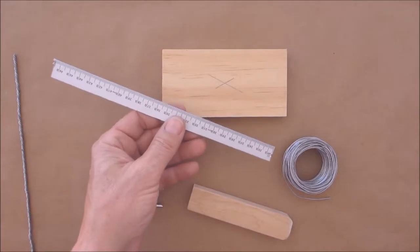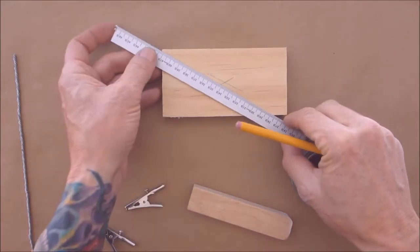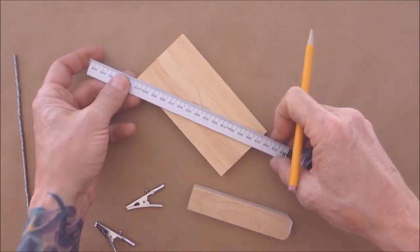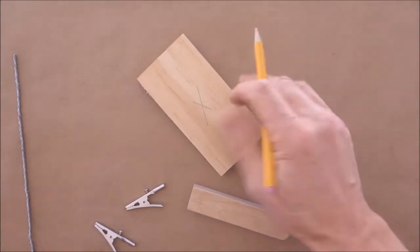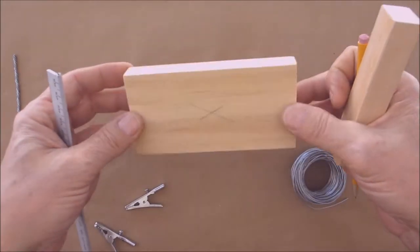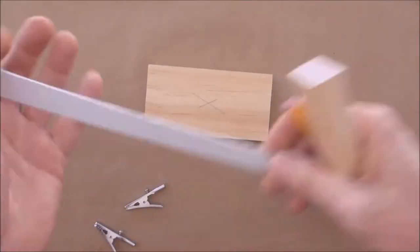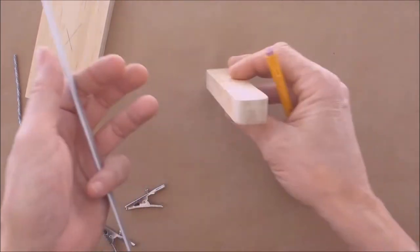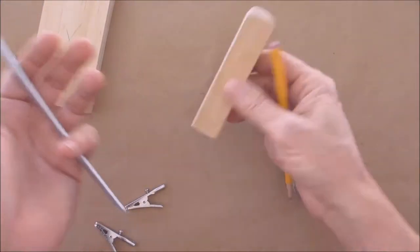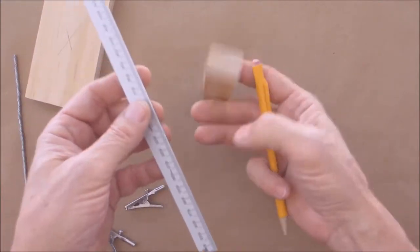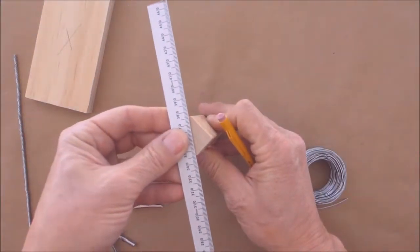So I have a block of wood right here. What I did was I went from corner to corner and made a little mark, then corner to corner and made a little mark, and that's the center. I have an upright piece. The piece I just had in my hand is the base. Now the upright piece is going to hold the wire and is going to be attached to the base.